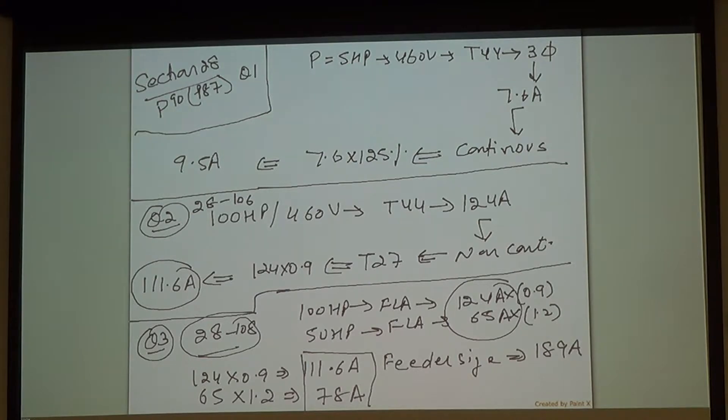When two motors, four motors, ten motors, if they're all non-continuous, you just multiply individually by their factors on table 27, and then in the end add them. That's all.